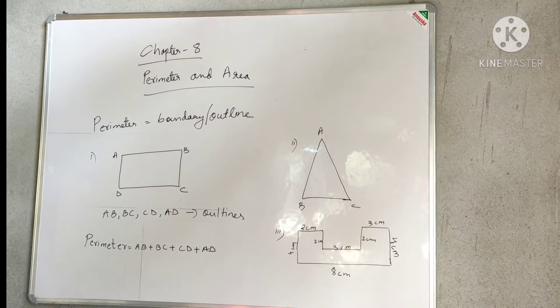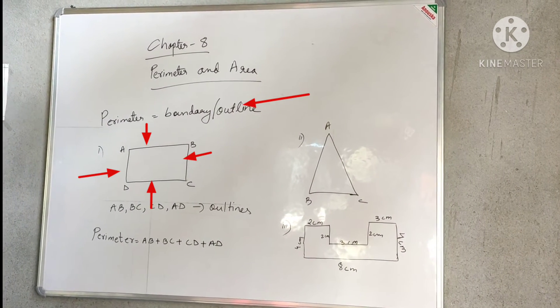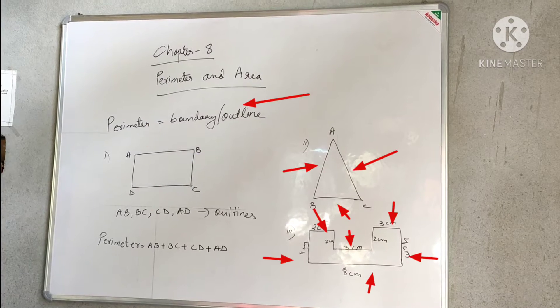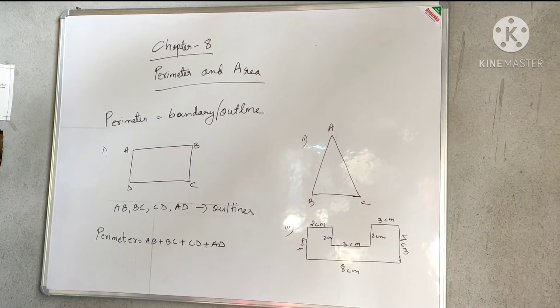So what exactly does perimeter mean? Perimeter means it's a boundary or outline. The outer covering of any given figure is your perimeter.